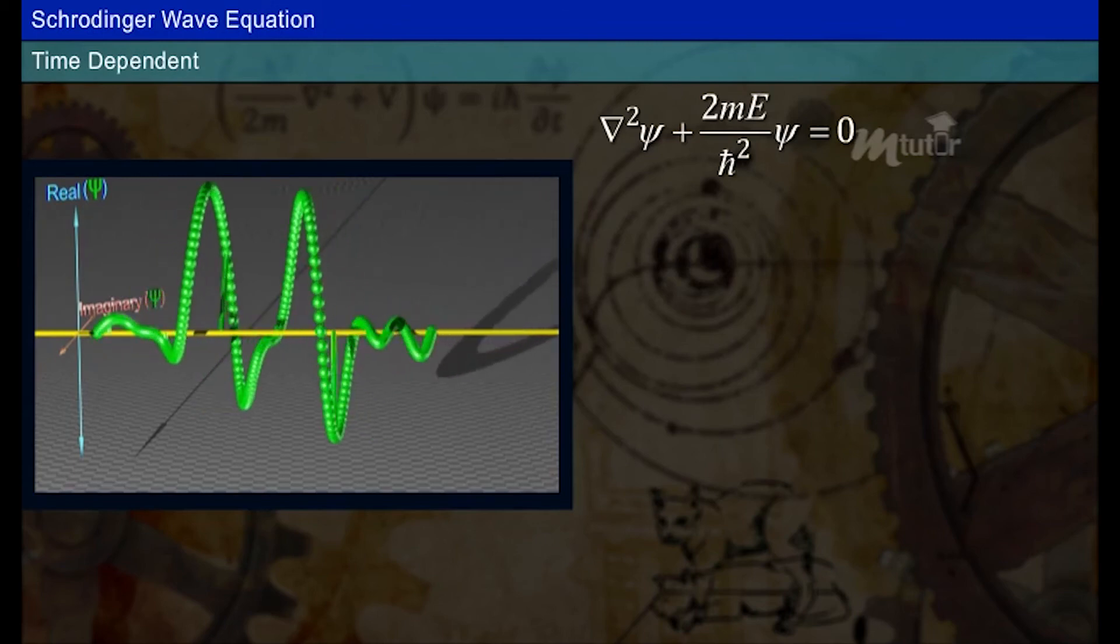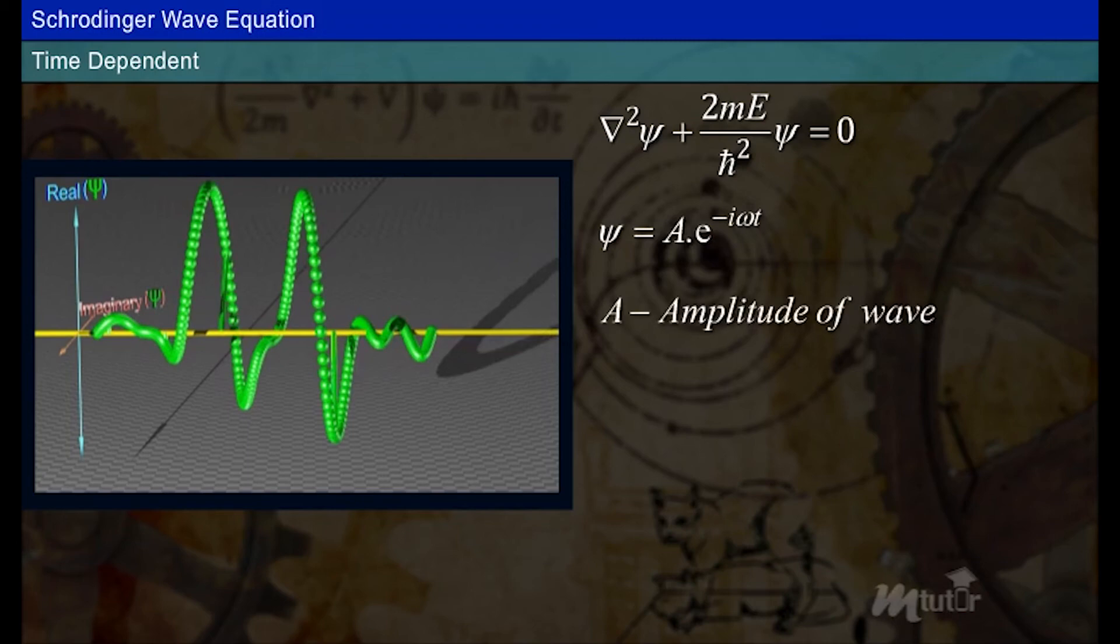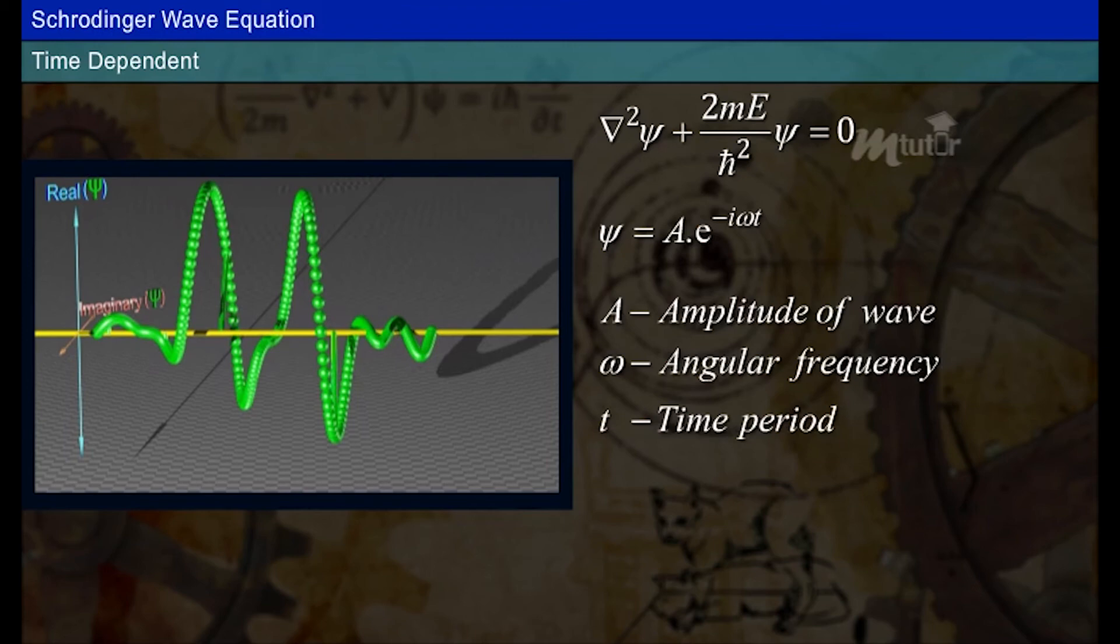Let us start with Schrödinger time-dependent wave equation. Schrödinger time-dependent equation develops as follows. Consider a wave function represented as psi is equal to A into e to the power minus i omega t, where A is amplitude of the wave, omega is the angle of frequency, and t is the time period.